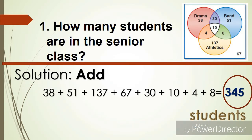We have some questions to answer. How many students are in the senior class? We are talking about the total number of students in senior class. This is our solution. We're going to add those elements: 38 plus 51 plus 137 plus 67 plus 30 plus 10 plus 4 plus 8 equals 345 students in all.